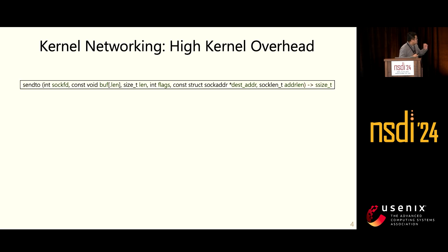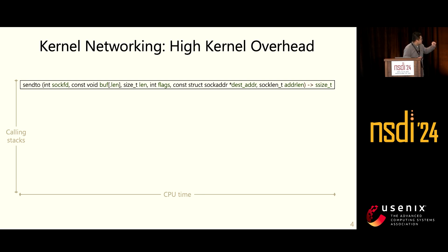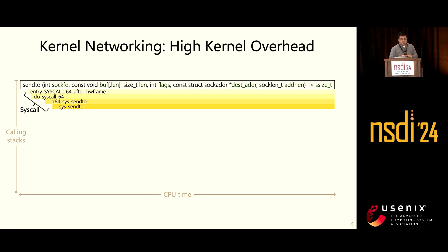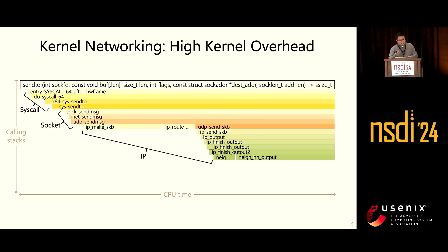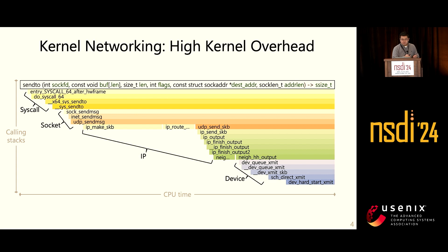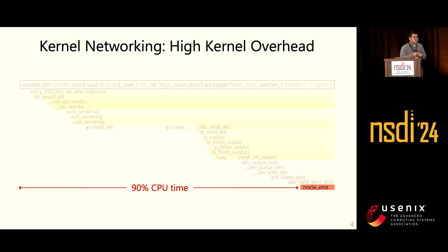Let me explain using a simple OS API for sending data over networks — it has many layers. Looking at its flame graph, with function call stack on one axis and CPU time on the other, you can see why so much time is spent in the kernel. First, it goes through the syscall layer doing user-kernel context switching. Next, through the socket layer, then the IP layer — which spends a lot of time on packet buffer allocations — then the device layer, and finally the driver function to actually send the data. Overall, around 90% of CPU time is spent on various kernel layers.